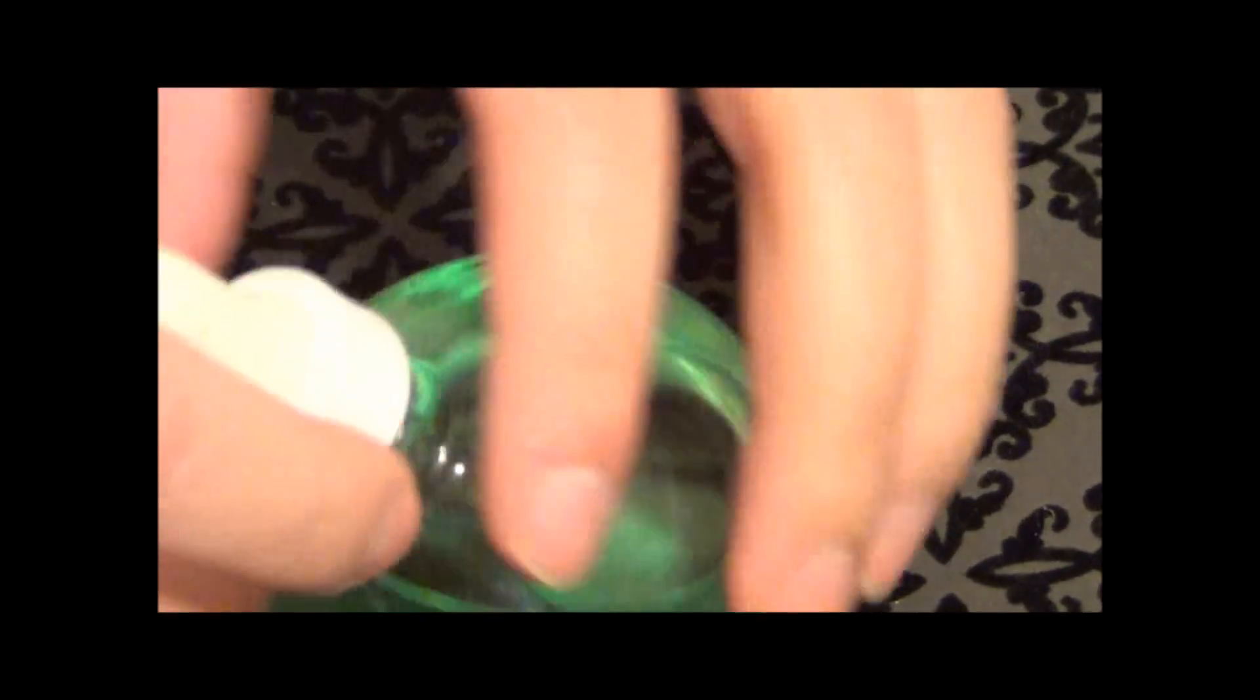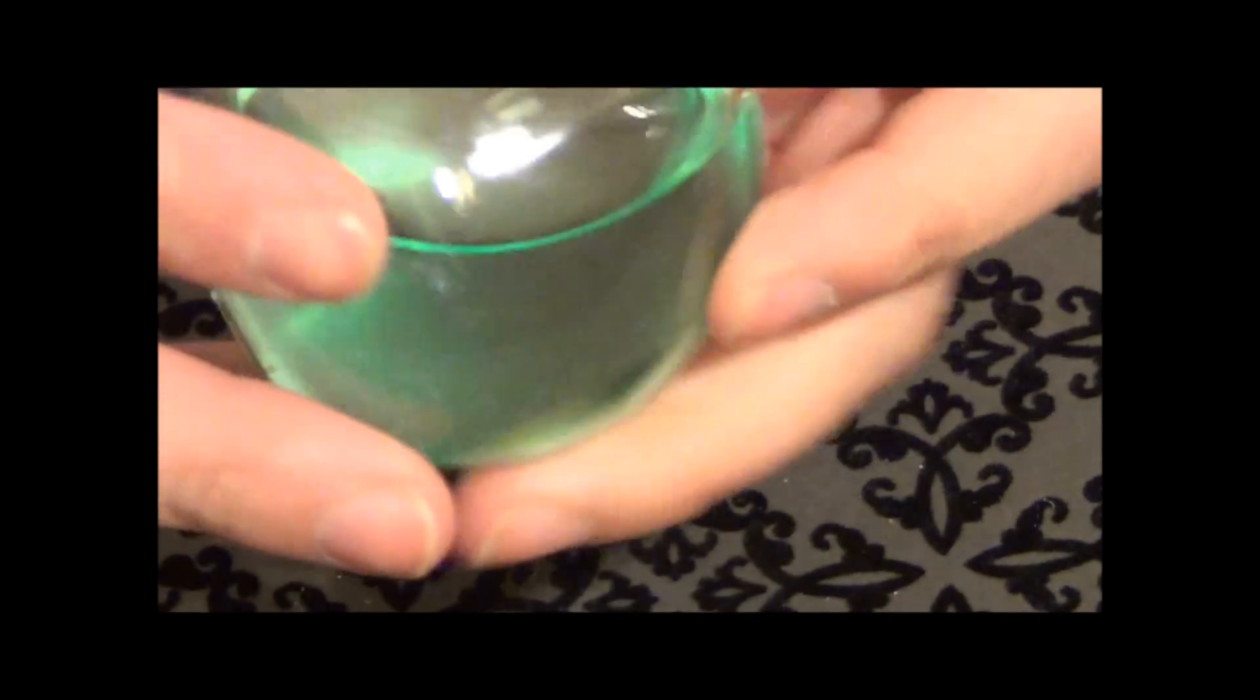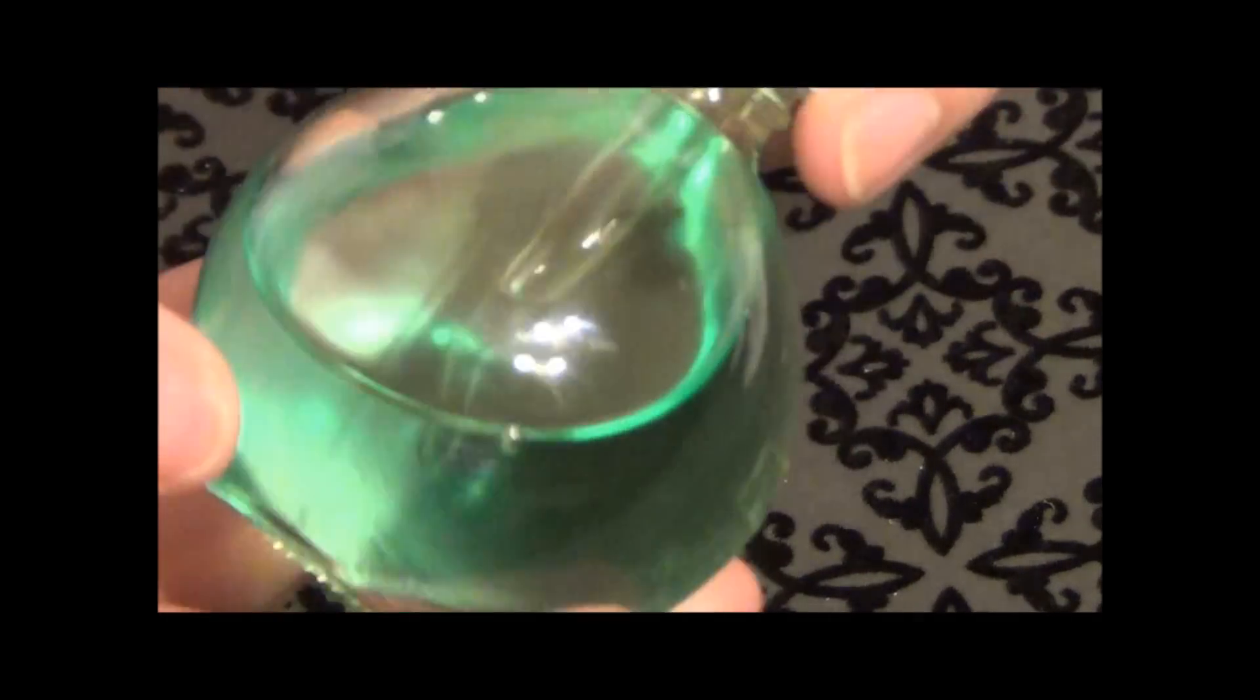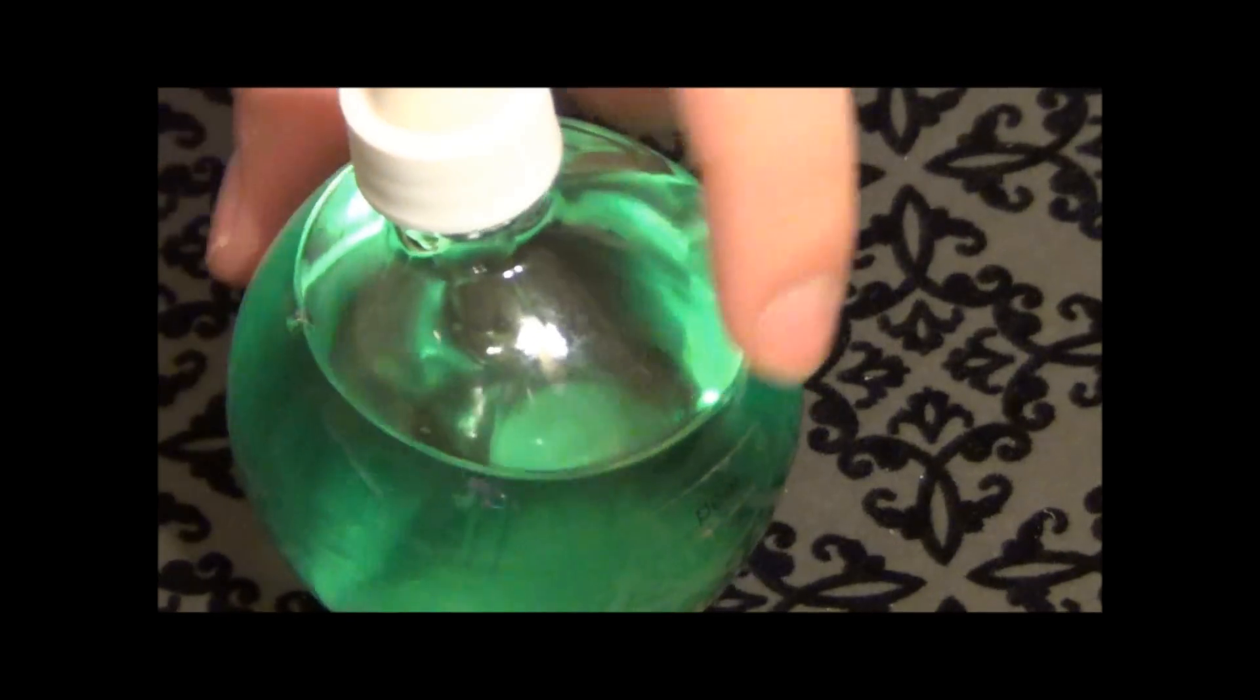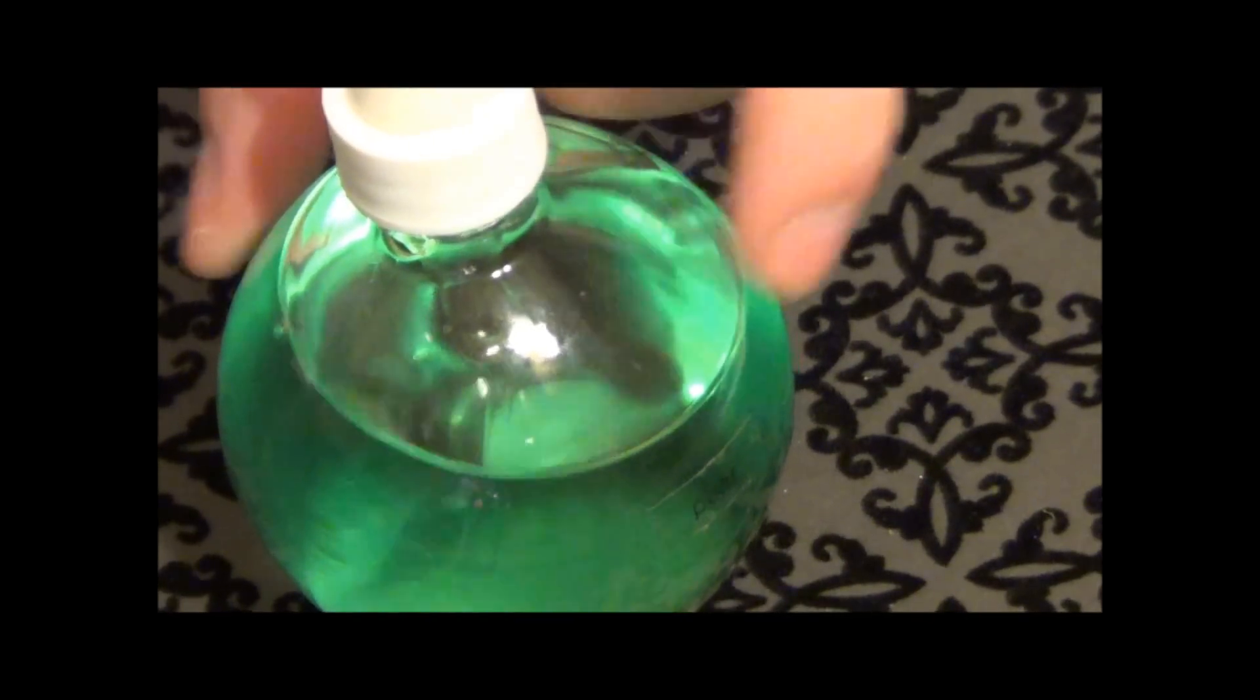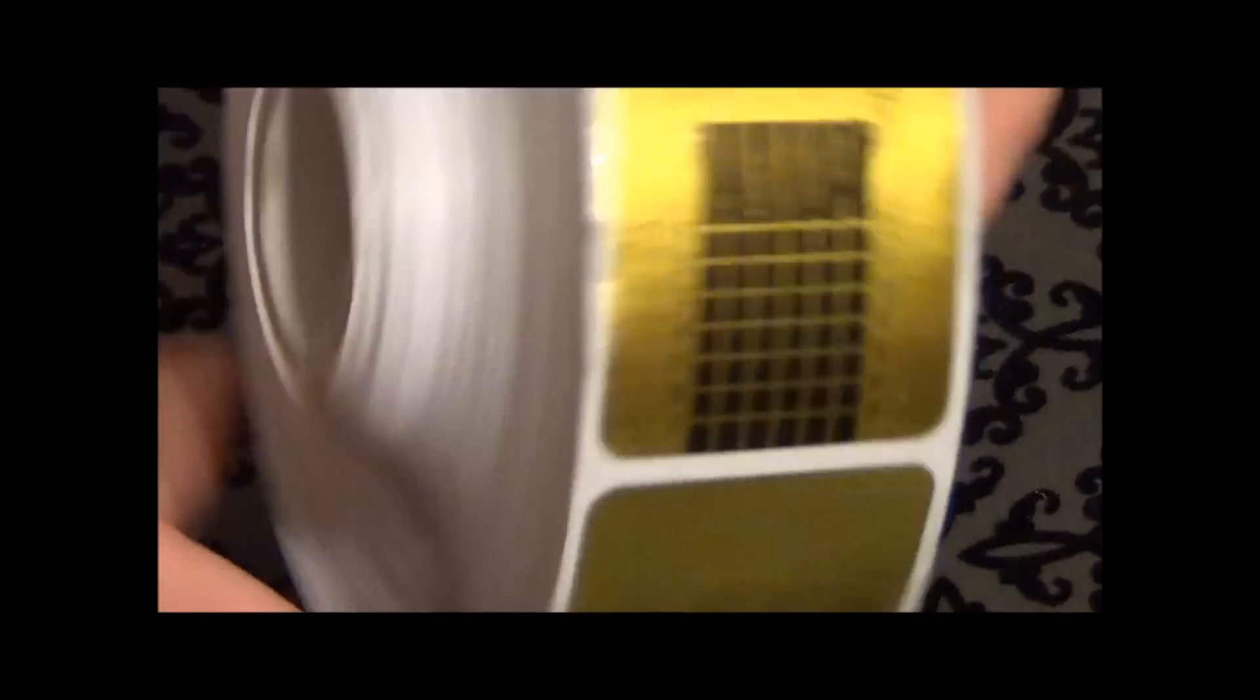También, aprovechando que este estaba en especial, agarré el aceite de cutícula. El Bubble, el que tiene el gotero. Es el que se me antoja más que la brocha. Este es de olor a pera que agarré.